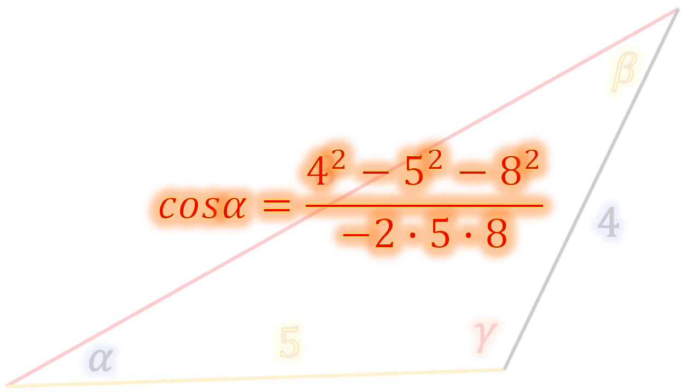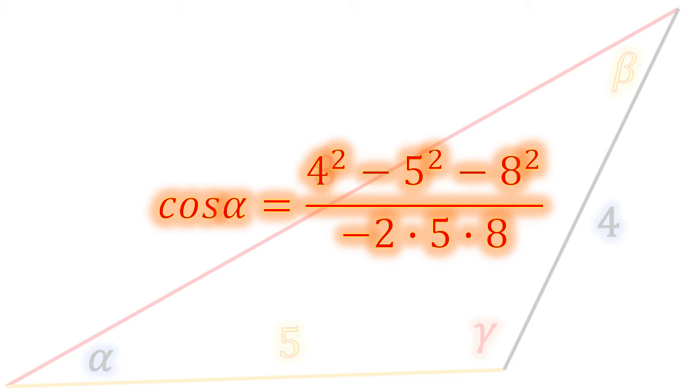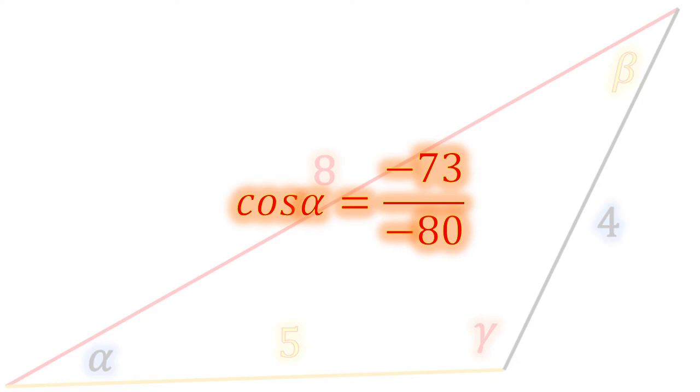So if we go ahead and add in our legs 4, 5, and 8, you will find that we have a cosine of negative 73 over negative 80. That gives us our cosine alpha of 0.9125, and when we take the arc cosine of that, our alpha is 24.147 degrees.